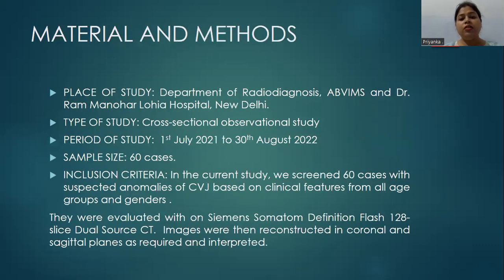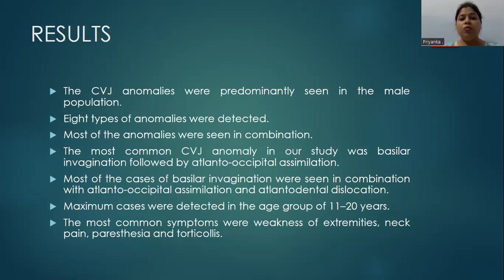The study was conducted in the Department of Radiodiagnosis at Atal Bihari Vajpayee Institute of Medical Sciences and Dr. Ramanohar Loya Hospital, New Delhi, between 1st July 2021 to 30th August 2022. In the current study, we screened 60 patients with suspected anomalies of CVJ based on clinical features from all age groups and genders, evaluated on a 128-slice CT scanner. CVJ anomalies were predominantly seen in the male population. Eight types of anomalies were detected, and most of the anomalies were seen in combination.